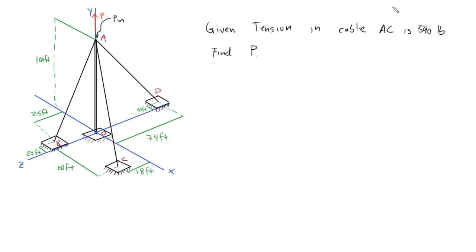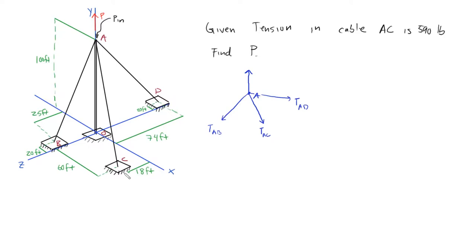In this problem, our goal is to find the reaction force at the pin A, called P. The whole process of this video is to solve for tension forces given in arbitrary directions in three-dimensional space. To get started, we draw the free-body diagram of point A. At point A, we have tension forces TAB, TAC, and TAD going in their respective directions, plus the reaction force P going directly upward in the Y direction. Our axes are defined in a right-hand coordinate system, oriented in a specific way.